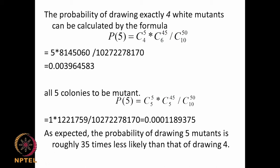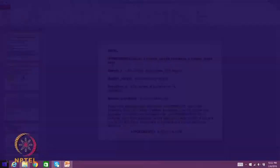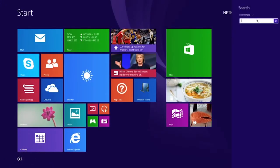We can also do this in Excel. There is a function for hypergeometric distribution where we provide sample successes, number of samples, maximum possible successes, and population size — corresponding to x, small n, capital S, and capital N respectively. Let me open Excel to demonstrate.